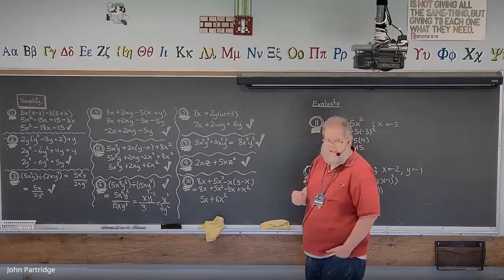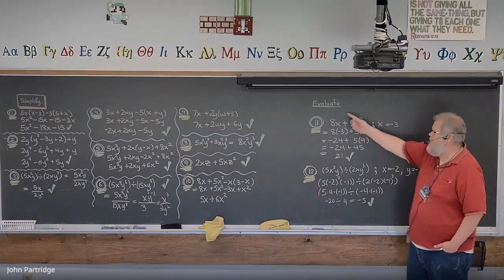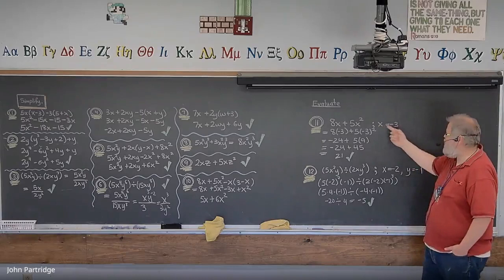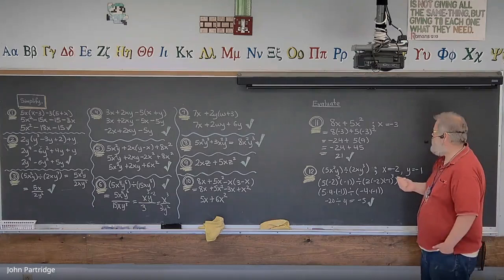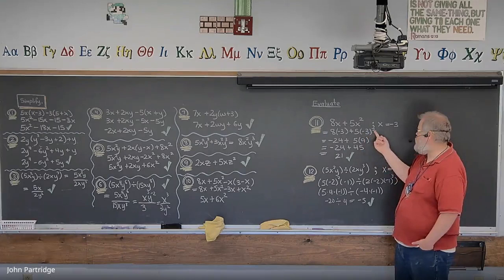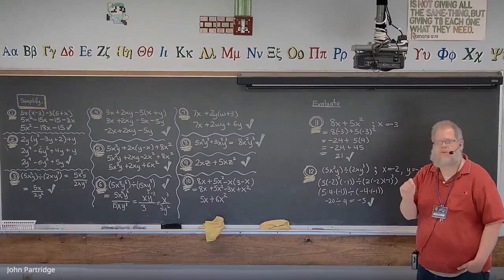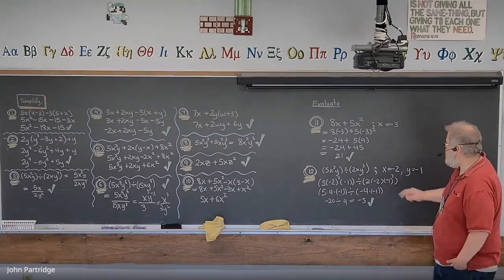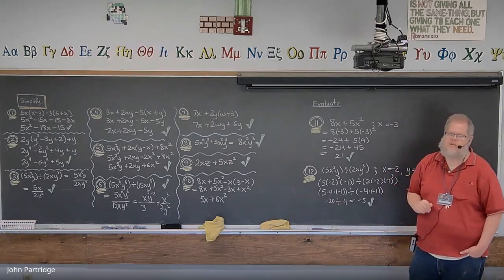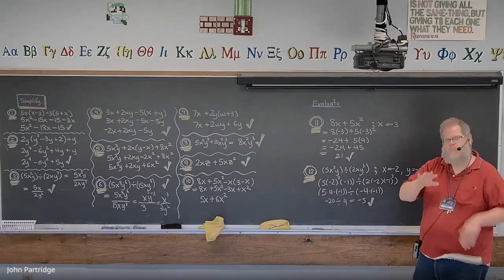Problem 11: evaluate 8x + 5x² at x = -3. Plug in -3: 8(-3) = -24. Order of operations requires squaring first: (-3)² = 9, then 5 times 9 = 45. So -24 + 45 = 21. Final answer: 21. Pro tip for 100% success: whenever you substitute a number into an expression, always surround it with parentheses where the variable used to be. Do that every time and you'll be perfectly fine.